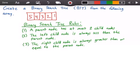Hey guys, and welcome to this video on binary search trees or BST for short. We want to create a binary search tree from the following array. I have the array in red and it contains the integer values 5, 4, 3, 2, and 1. As you can tell, this is an array that is sorted.